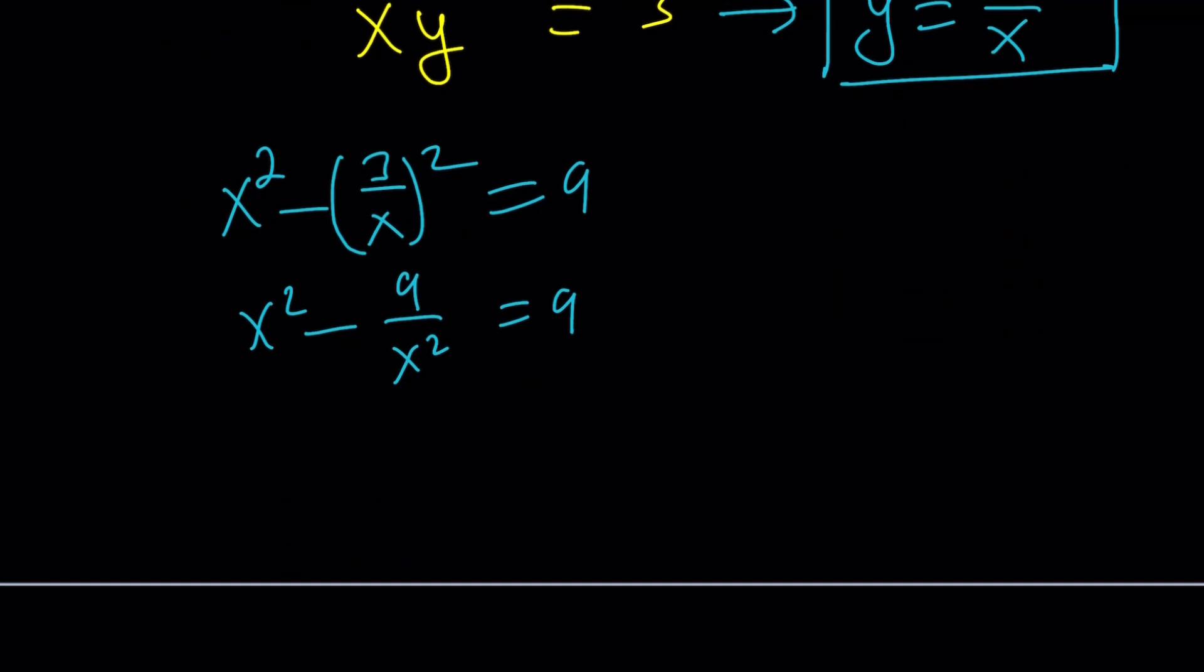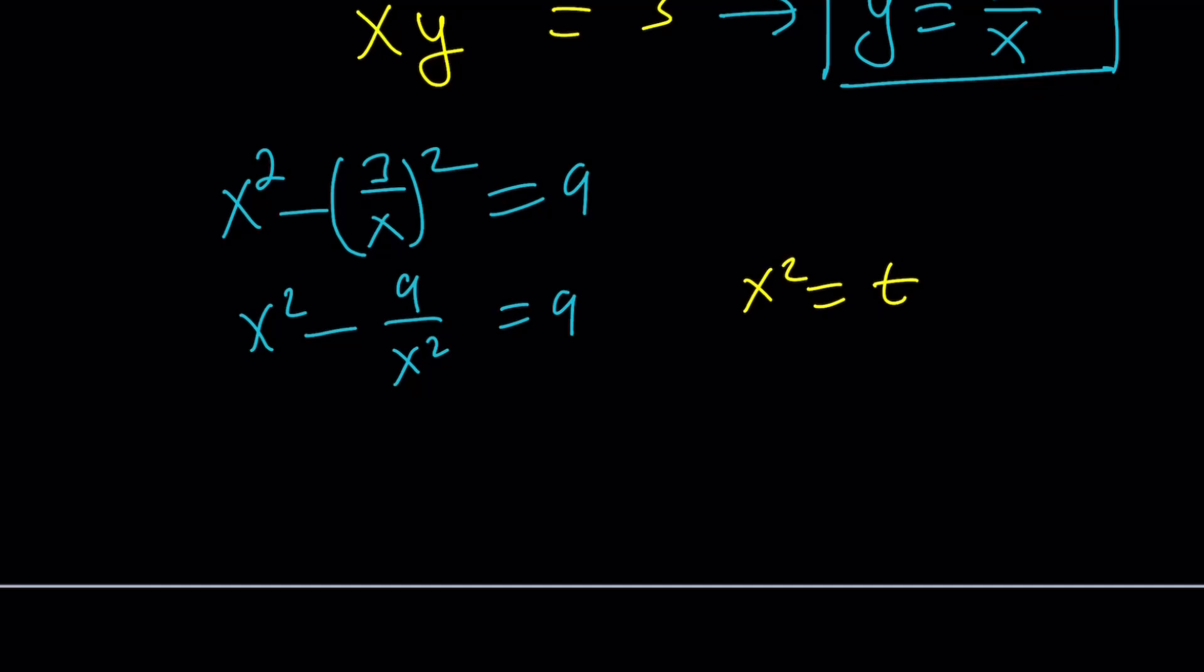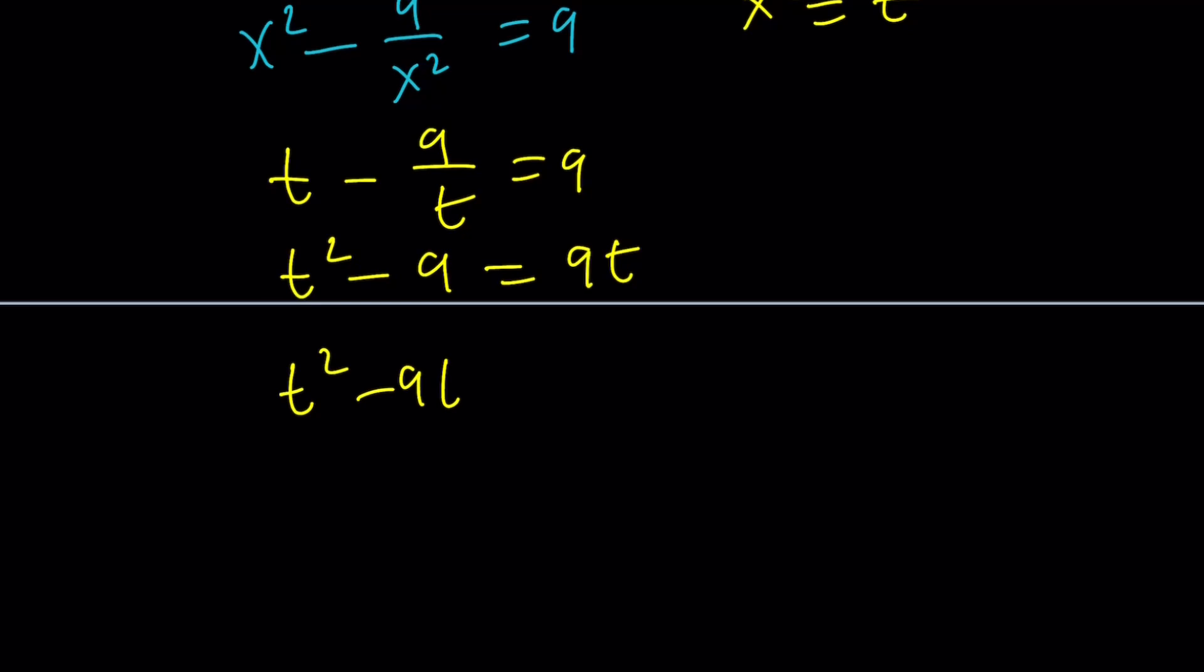At this point, you can use substitution. So, let's go ahead and set x squared equal to t. This gives us t minus 9 over t equals 9. Multiply everything by t. And then put everything on the same side. So, this becomes a quadratic equation. Solve it using the quadratic formula.